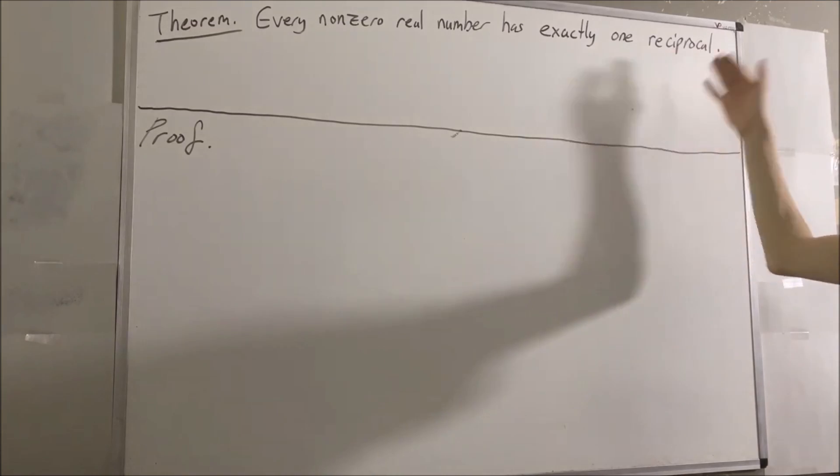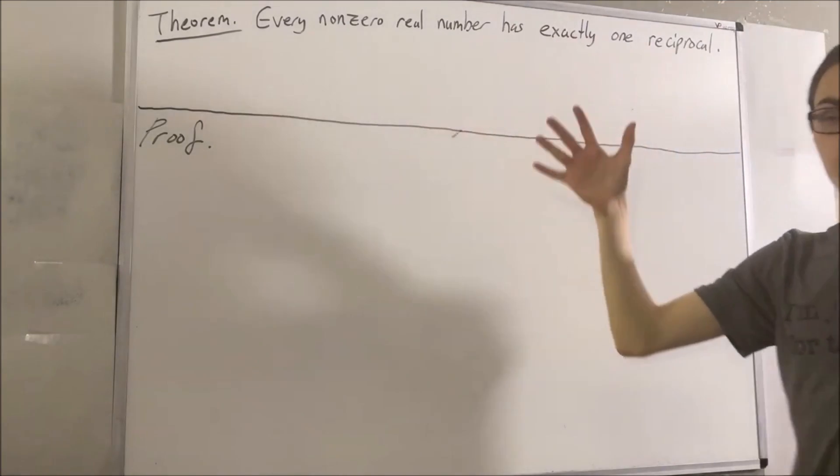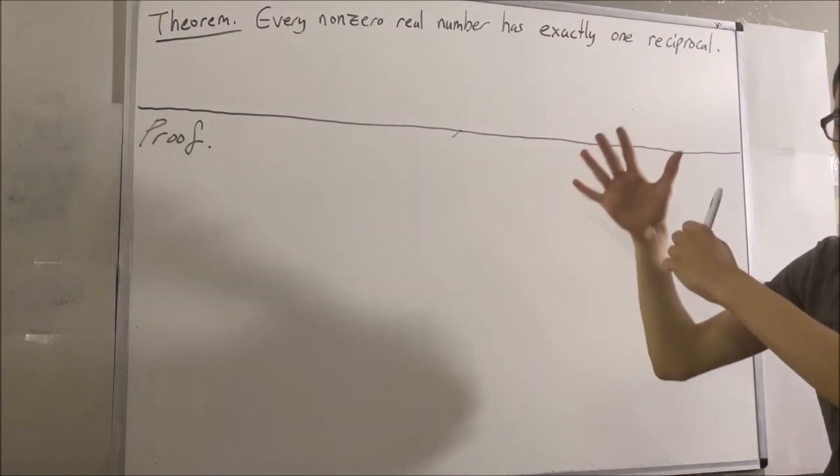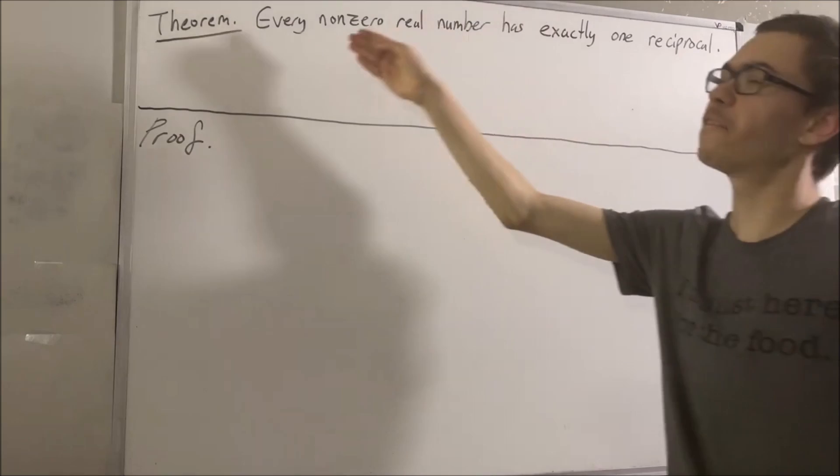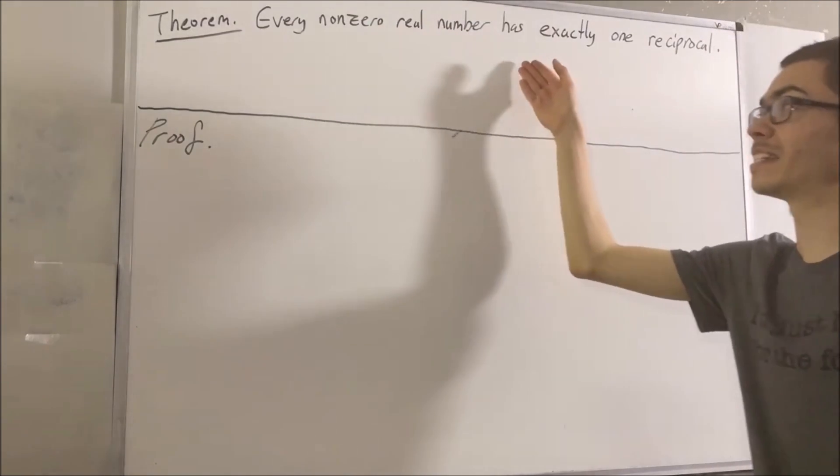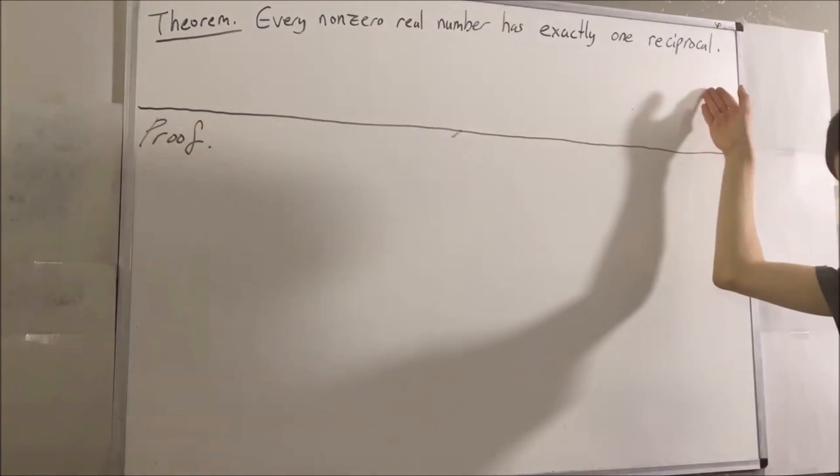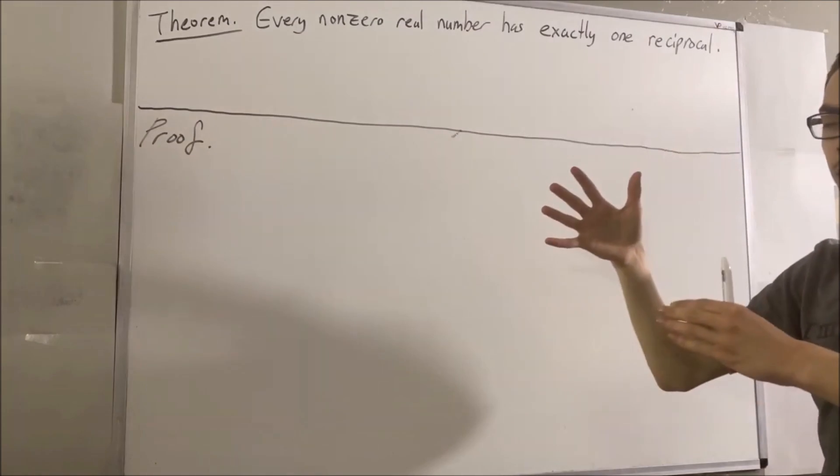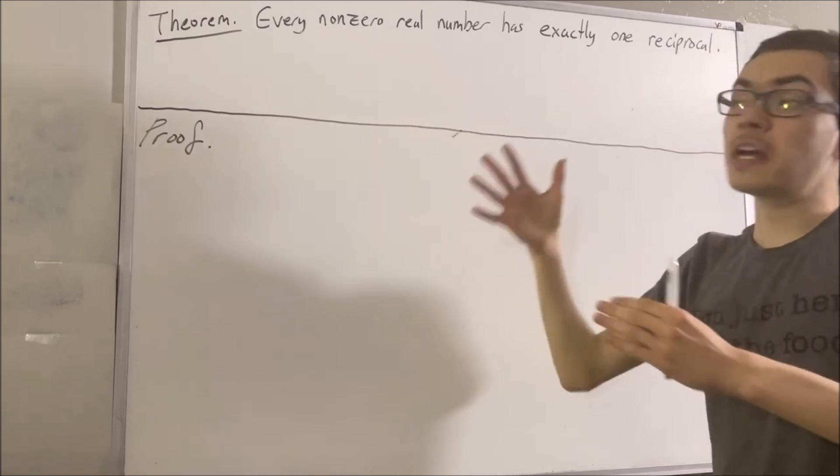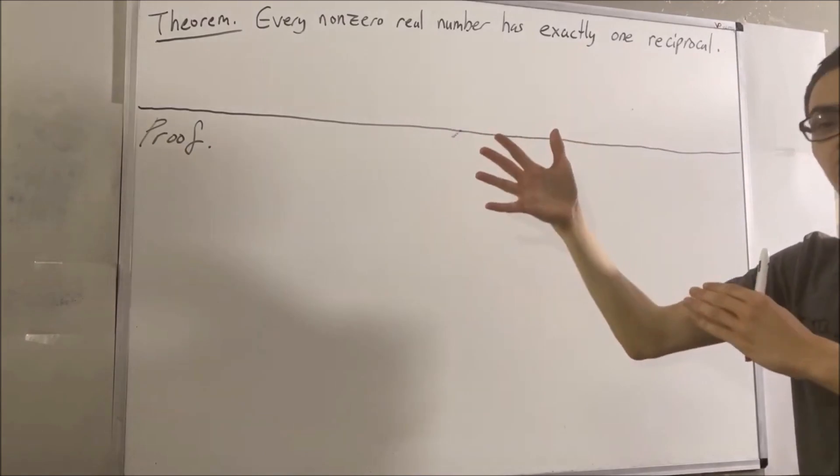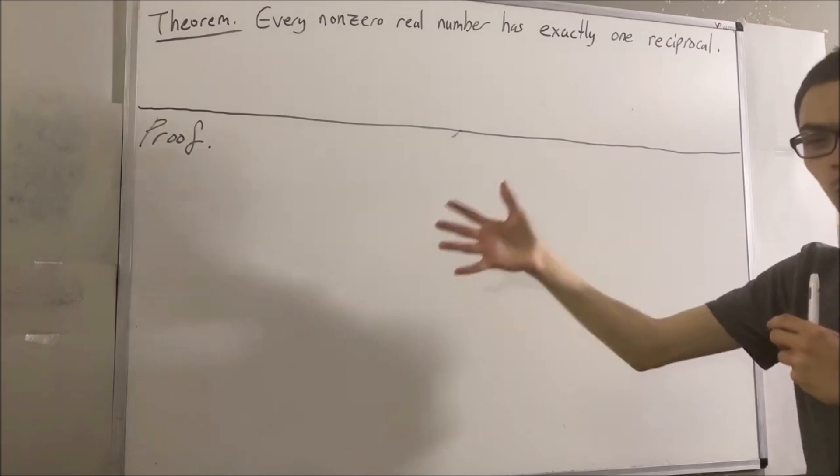Now, in proving this theorem, we are going to use the following fact which comes from the field properties of the real numbers. It's the fact that every non-zero real number has at least one reciprocal. More specifically, we have that for every non-zero real number x, there exists a real number y such that x times y is equal to 1.